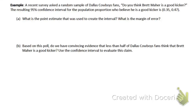Continuing through our examples: a recent survey asked a random sample of Dallas Cowboys fans, 'Do you think Brett Maher is a good kicker?' The resulting 95% confidence interval for the population proportion who believe he is a good kicker is 0.35 to 0.47. What is the point estimate used to create this interval? It's smack dab in the middle of that interval — 0.41.